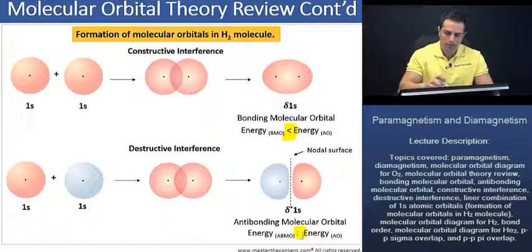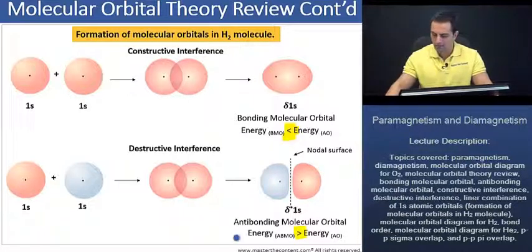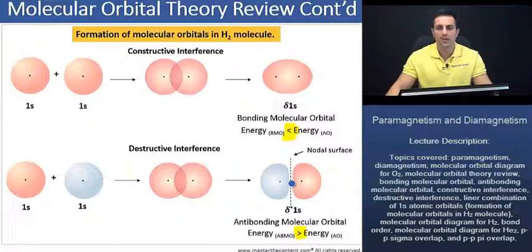Furthermore, moving on about antibonding molecular orbitals, we had stated that the antibonding molecular orbital is going to be higher in energy than the two isolated 1s atomic orbitals, because its electrons can't occupy that central region, and they can't contribute to bonding.